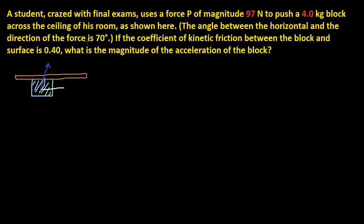Hi, we have a fairly straightforward problem over here. A student crazed with final exams used a force P of magnitude 97 to push a 4-kilogram block across the ceiling across this room as shown here. The angle between the horizontal and the direction of the force is 70 degrees, so this part right here is 70 degrees — theta equals 70 degrees. The coefficient of kinetic friction between the block and the surface is 0.40. What is the magnitude of the acceleration of the block?